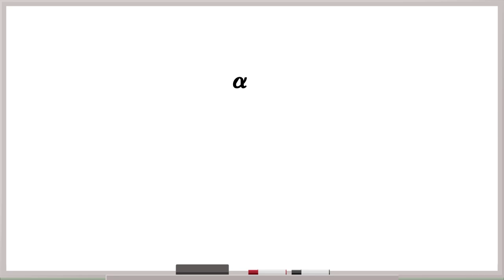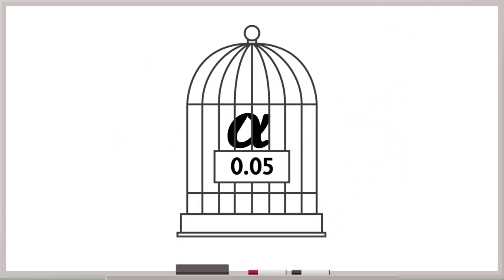To adjust this problem of multiple comparisons, we must control our alpha. In essence, holding it at .05 by correcting for the fact that we're performing multiple statistical tests that might inflate our false positive rate.